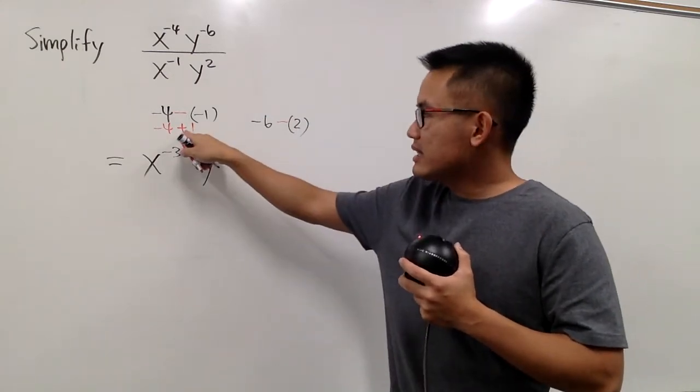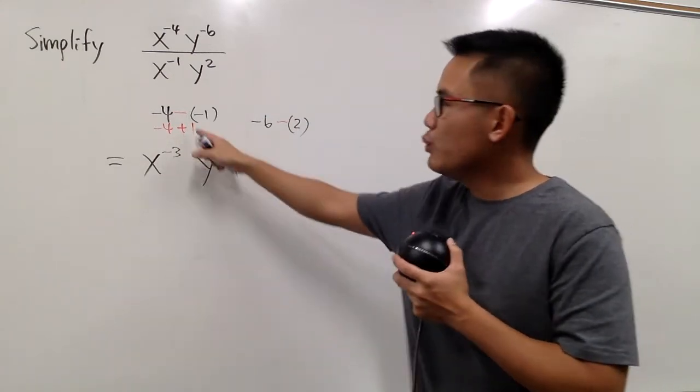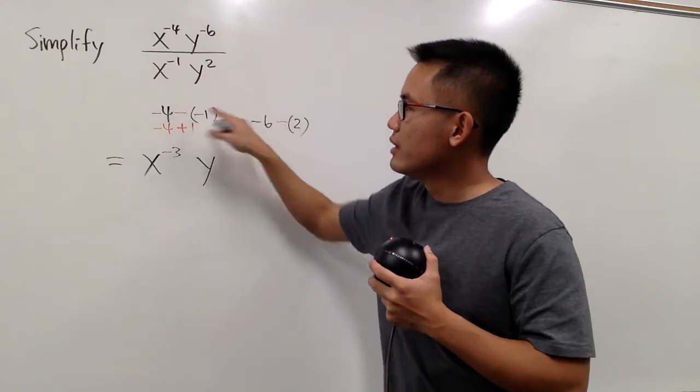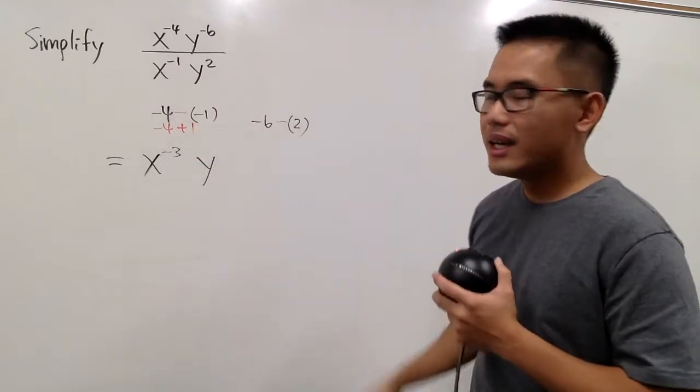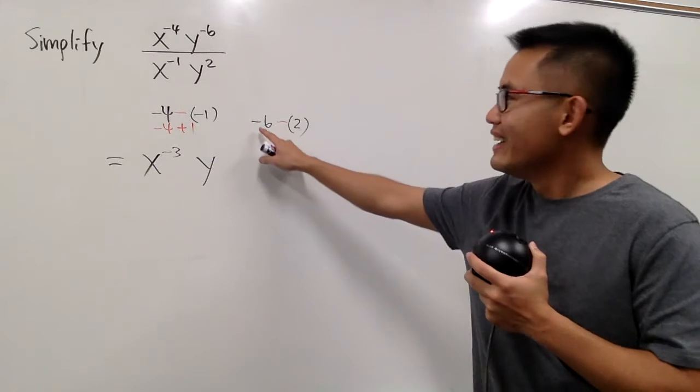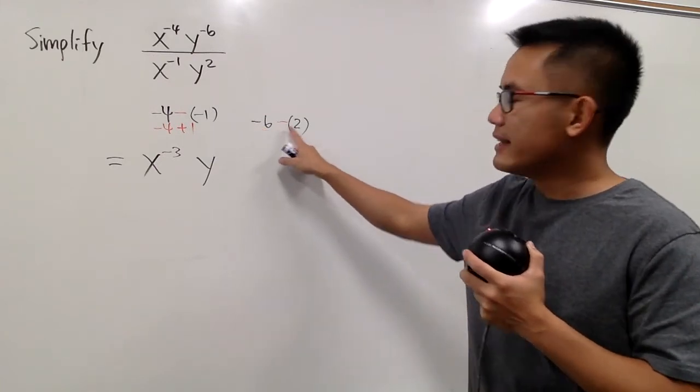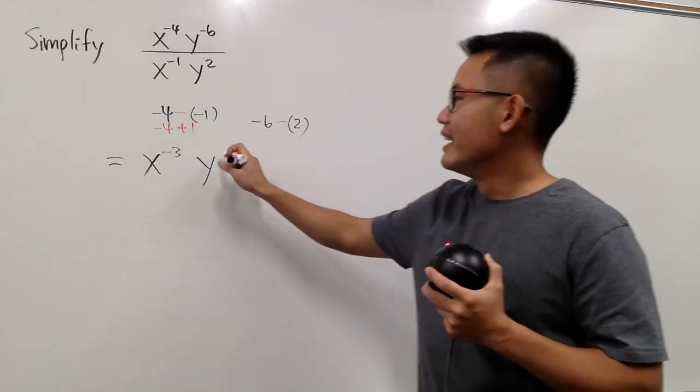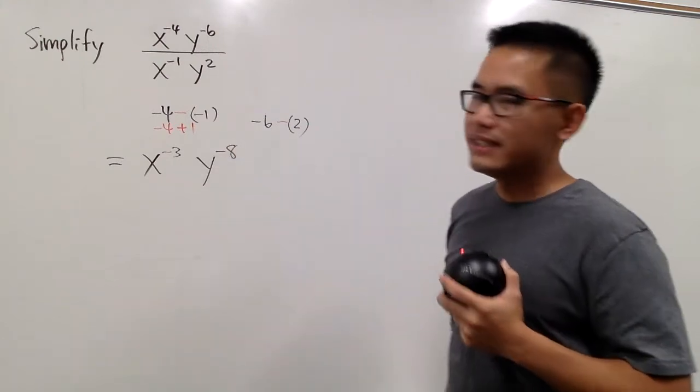Earlier, it's kind of like adding, because it was a minus-minus situation, so that's why it's adding. But in this case, we are legitimately subtracting. This is negative 6 minus 2, which is negative 8, isn't it?